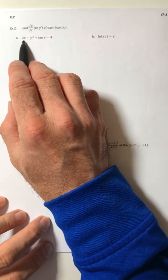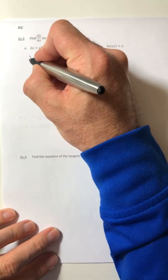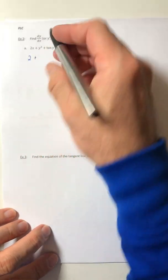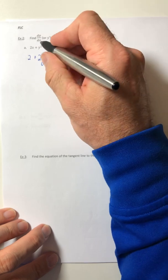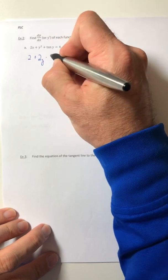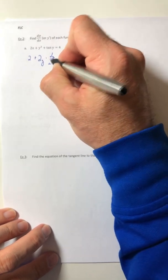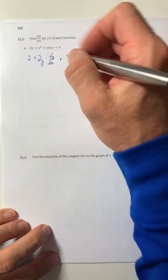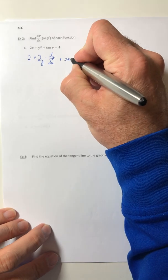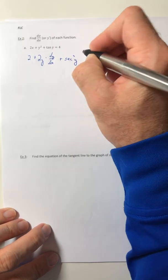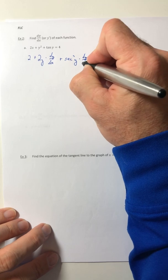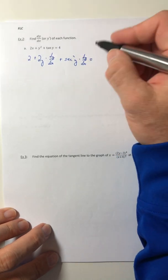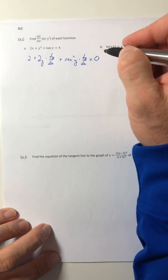Alright, so the derivative of 2x is just 2. The derivative of y squared would be 2y, and we just did the derivative of a y, so dy/dx. Plus the derivative of tangent, secant squared. And I just did the derivative of a y again.